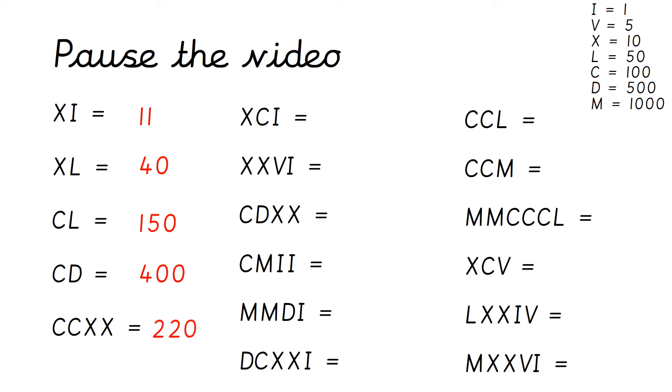CCXX is worth 220 because you've got C and C which are the same, so you add them together. And then you've got XX which are the same, so you add them together. Then we've got XCI, which is 91. So X is smaller than C, so you would do C take away X, and then you would add I, so that's 91.